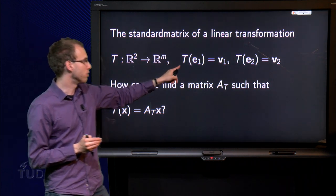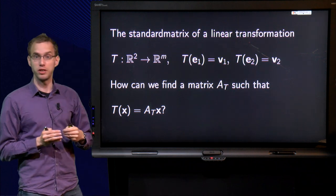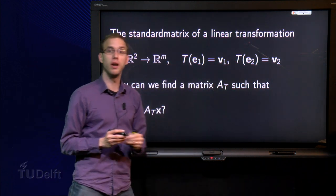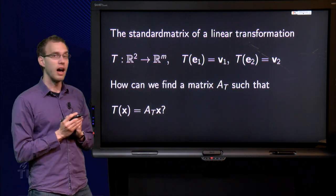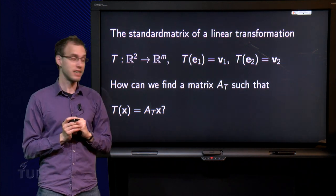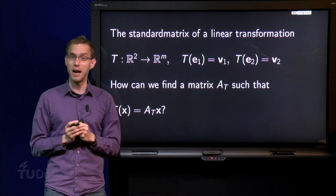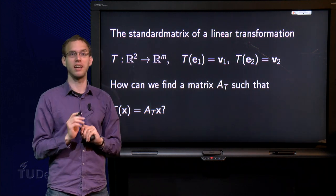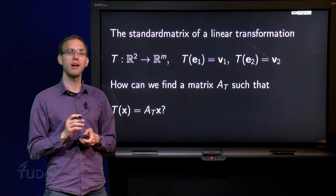So we go from R2 to Rm. And suppose I know the images of E1 and E2, which are some vectors V1 and V2 in Rm. Now we want to find a matrix AT such that the image of X equals AT times X for any vector X.